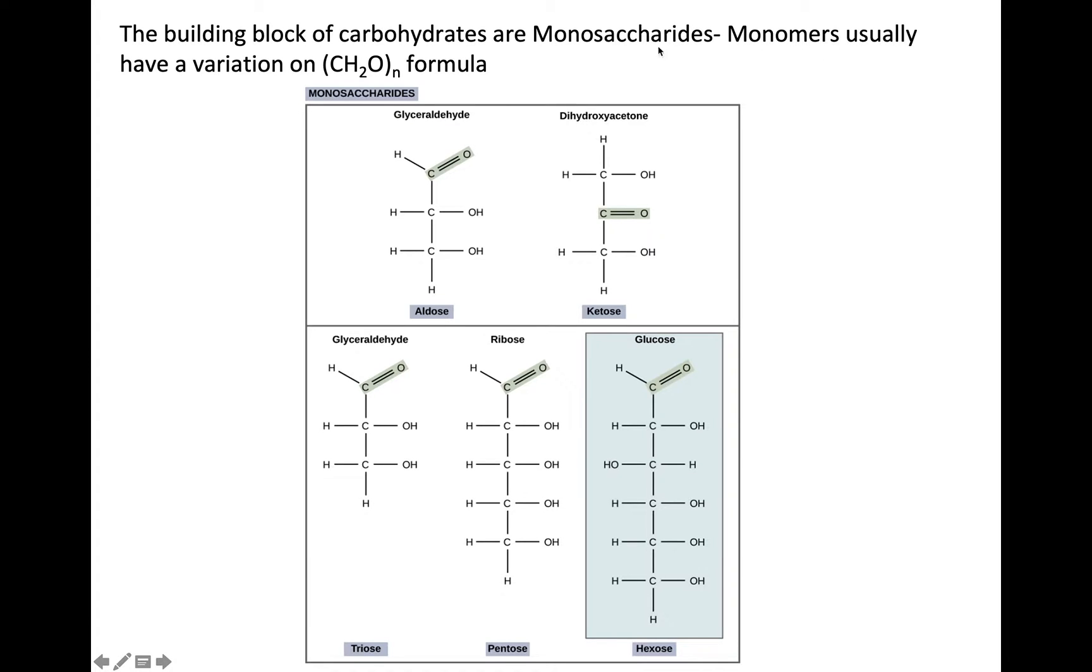So the monomers usually have a molecular formula that follows this pattern. So for each carbon there's two hydrogens and one oxygen and this n could be any number. So it could be two then you would have two carbons, four hydrogens, and two oxygens. So here are some examples of monosaccharides. Here's glyceraldehyde, dihydroxyacetone. You may recognize the carbonyl functional group in here and also the hydroxyl group. Carbohydrates have a lot of these hydroxyl and carbonyl functional groups.